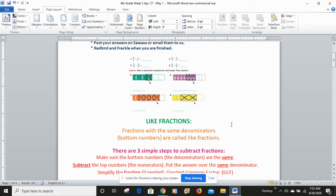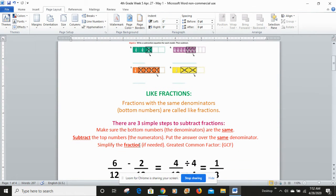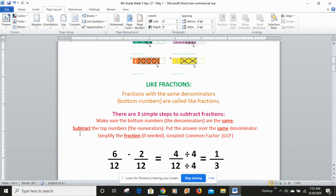So what are the steps to subtracting like fractions? There's three simple steps to subtract fractions. The first one is make sure the bottom numbers or the denominators are the same. The second step is if you have those common denominators, then you can subtract the top numbers, the numerators, and put your answer over the same denominator. And last, simplify the fraction if needed. Use greatest common factor or the GCF.